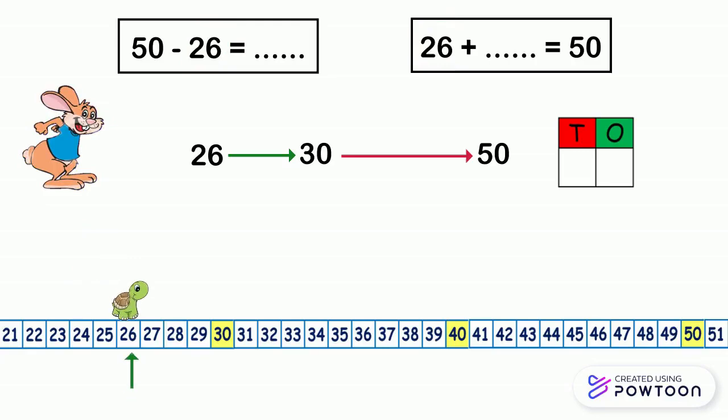We start with the number 26. So the turtle will walk slowly, one by one, till it arrives at the first whole tens, which is 30. We skip count by one after 26: 27, 28, 29, 30. So the turtle moves 4 ones. We write 4 in the ones place column.